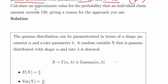Calculate an approximate value for the probability that an individual claim exceeds 120, so the probability of X being greater than 120. That word 'exceeds' is very important, giving a reason for the approach that you would use.